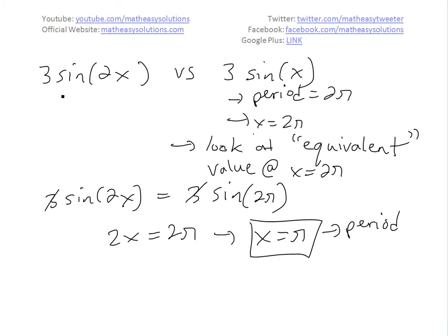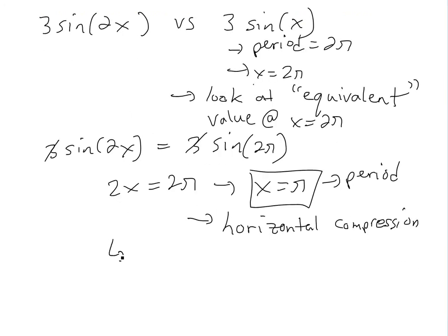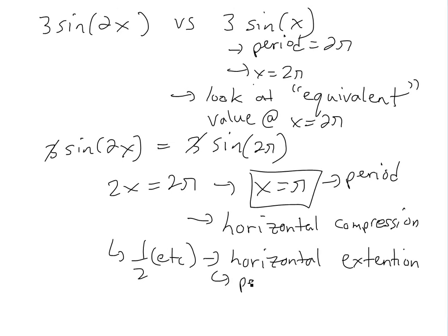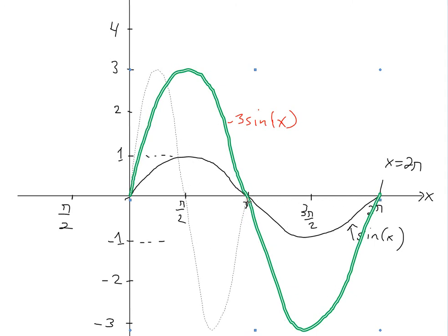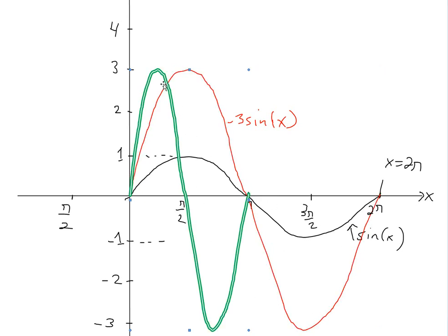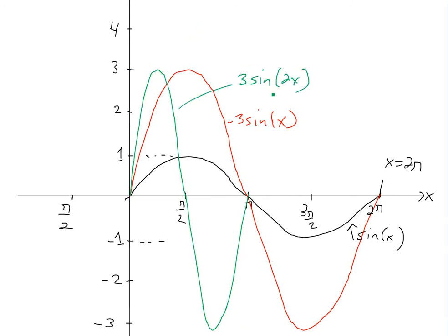So as you can see, this one is a horizontal compression. If instead we had 1/2 as the coefficient, solving would give x equals 4π, which would be a horizontal extension with a period of 4π. Now let's graph this new transformation. Transforming from 3 sine x to 3 sine 2x — the period is going to be π instead of 2π, and everything shifts accordingly. So we're basically compressing it horizontally.